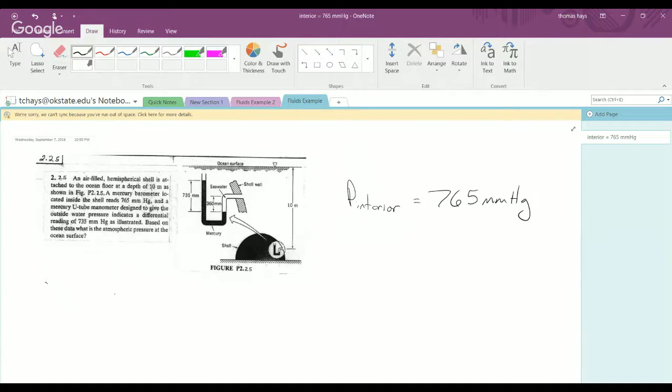Additionally, through the problem, a mercury U-tube manometer, as depicted in the problem, designed to give the outside water pressure, indicates a differential reading of 735 mmHg. So again, they give you a height displacement, which we know, based on what we know about fluids, is really a pressure.